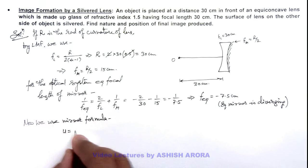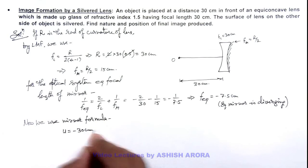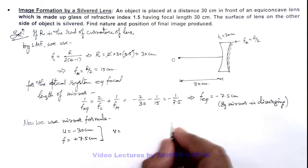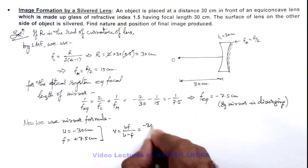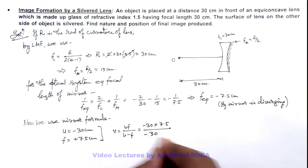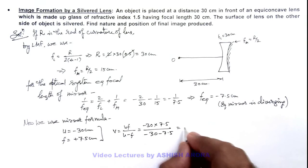As we take u is equal to minus 30 centimeter and focal length we can take as 7.5 centimeter. So in this situation, the value of v, the image position, can be given by u f by u minus f, which is minus 30 into 7.5 divided by minus 30 minus 7.5. On simplifying, this will give us plus 6 centimeter.